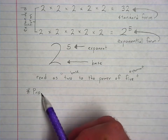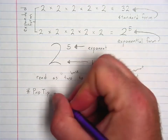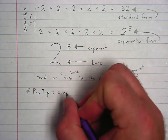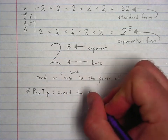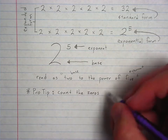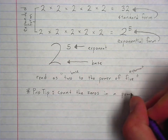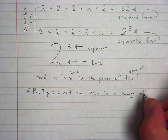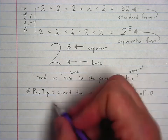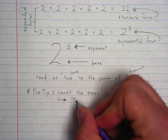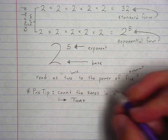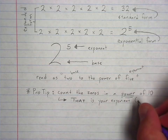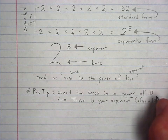Pro tip: if you are using a power of ten, there is a shortcut — you can just count the zeros. In a power of ten — 10, 100, 1,000, 1,000,000 — count the zeros in a power of ten. That number of zeros is your exponent after the ten.